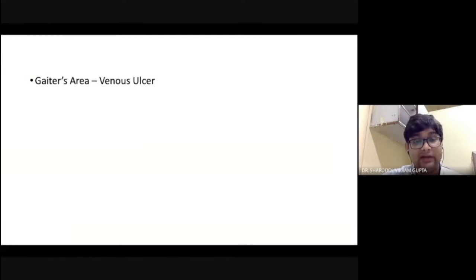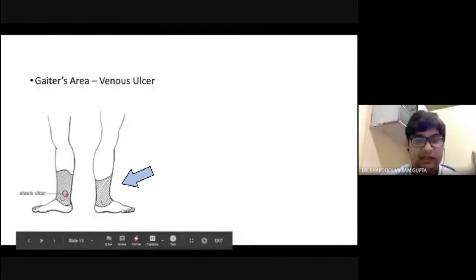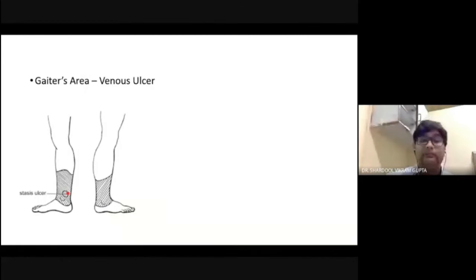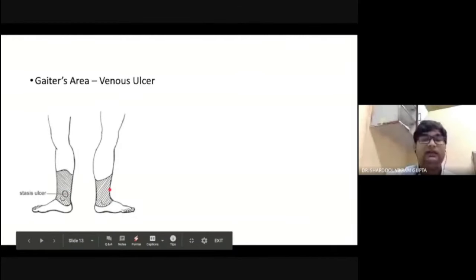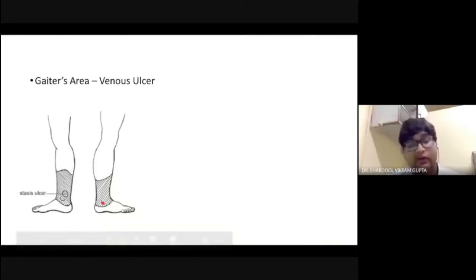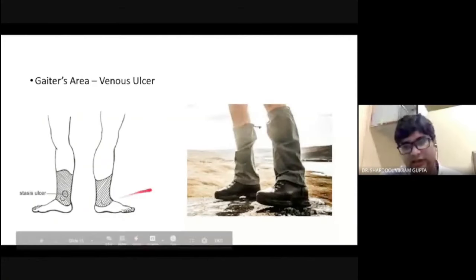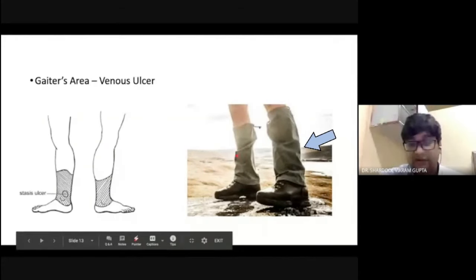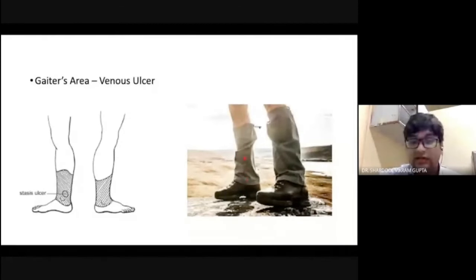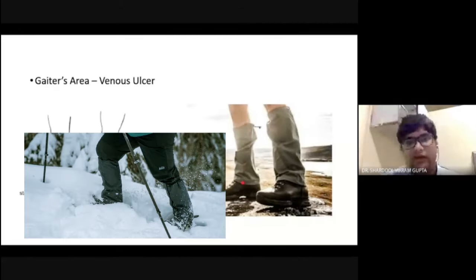Now coming to the gaiter's area. Venous ulcers are usually located in the gaiter's area — the lower part of the leg — most commonly at the medial malleolus, though they can occur anywhere in this region. This is an important MCQ topic and is usually asked in professional exams. The name derives from protective clothing worn by snow workers to prevent snow from entering the boot.